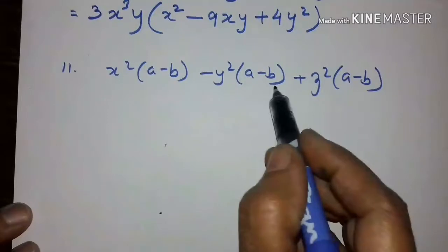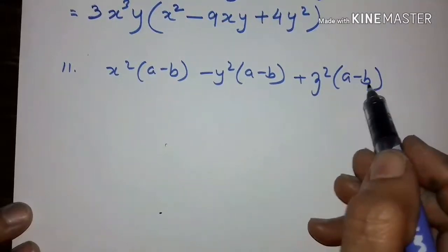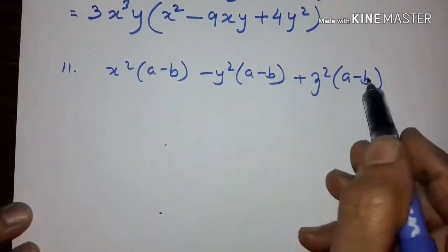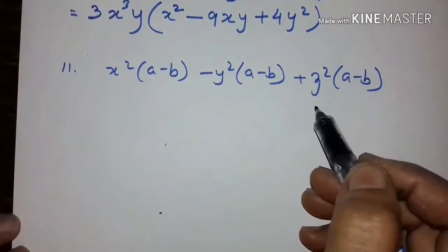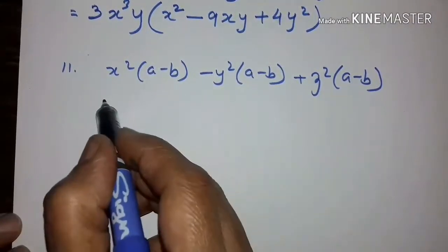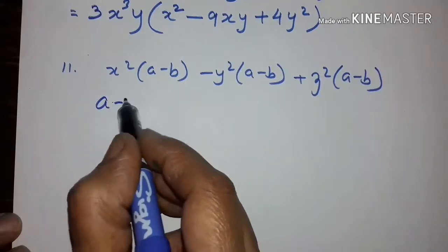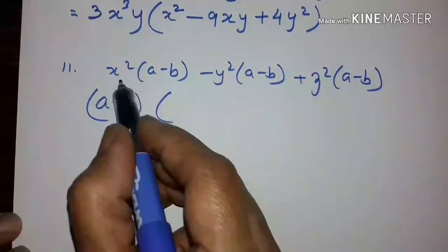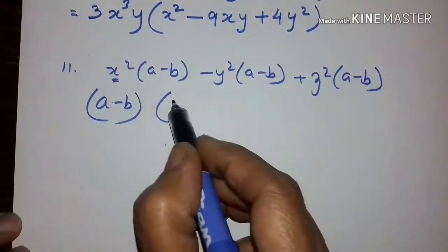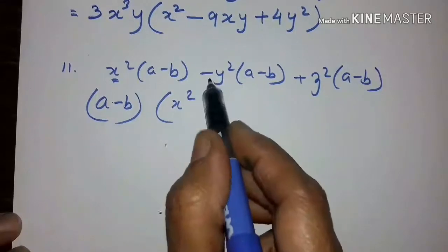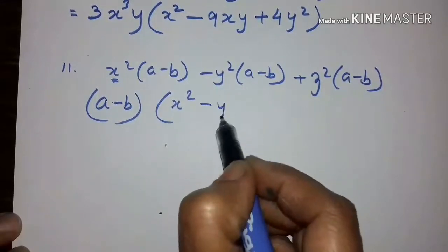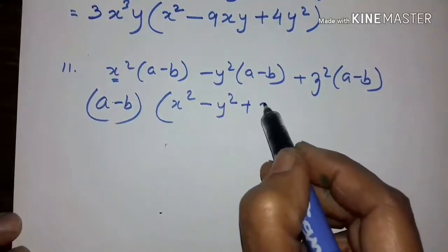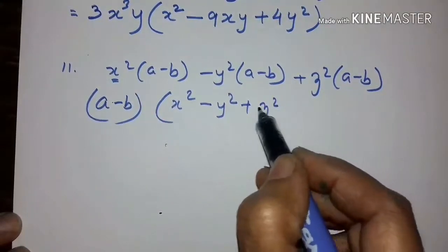In these three terms, A minus B is common. So let us take it out: A minus B. What remains is x squared, x squared minus y squared, and plus z squared.